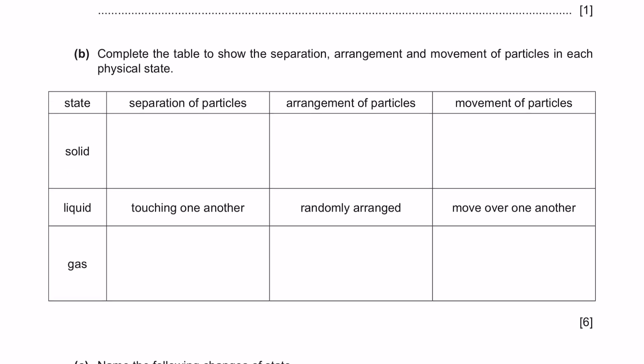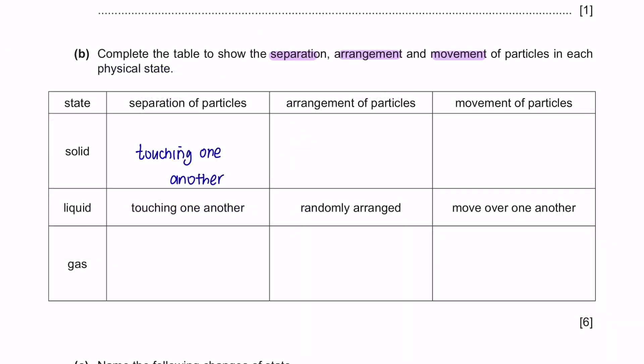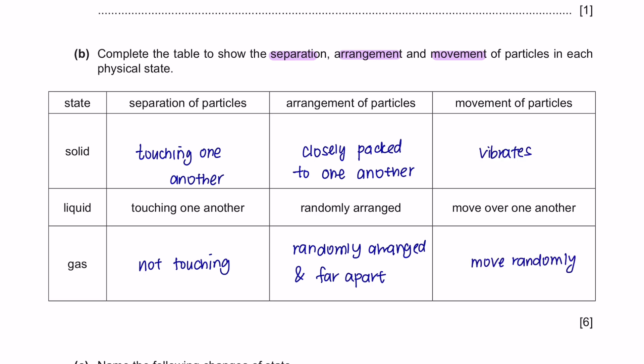Next question B. Complete the table to show the separation, arrangement and movement of particles in each physical state. This is why remembering the properties and structure for each solid, liquid and gas will come in helpful. Solids are packed closely together, therefore it touches one another. Gases are far apart from each other, so you can write it does not touch. As for the arrangement, solids are closely packed, liquids are randomly arranged, whereas gases are randomly arranged and far apart. Solids do not move, they only vibrate at its own place and gases move randomly.